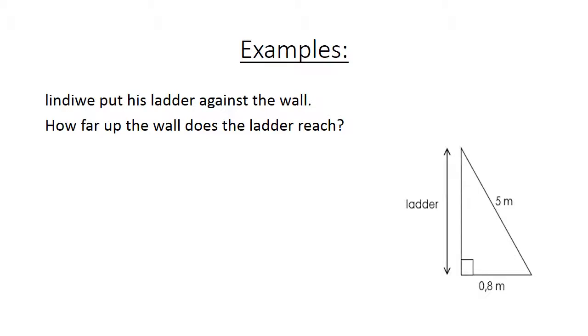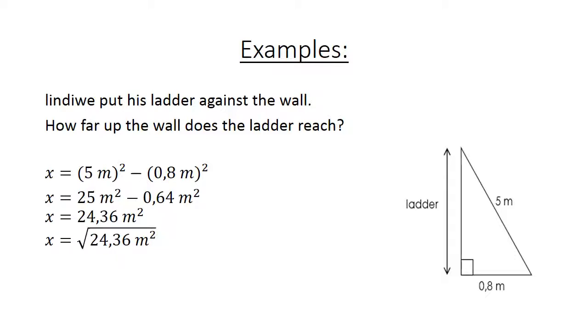The hypotenuse is 5 meters. X equals 5 meters squared minus 0.8 meters squared equals 25 meters squared minus 0.64 meters squared equals 24.36 meters squared equals the square root of 24.36 meters squared equals, if we round it to 2 decimals, 4.94 meters. The ladder is approximately 4.94 meters from the wall.